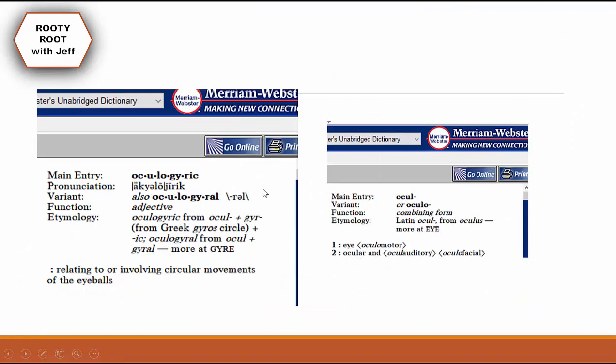So, oculogyric. Oculo means eye — like Oculus Rift — and gyric means spinning or circular. So oculogyric means relating to or involving circular movements of the eyeball.